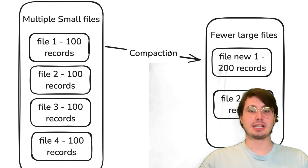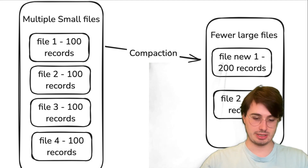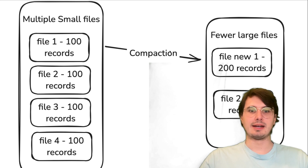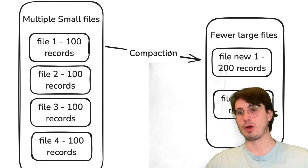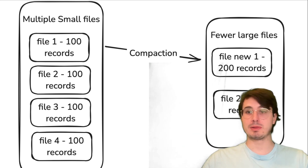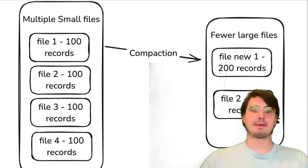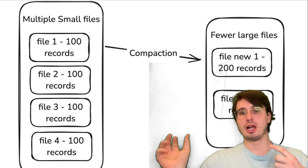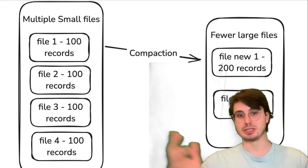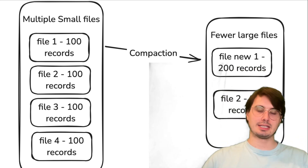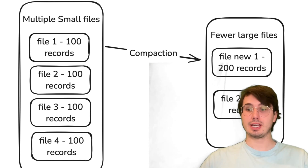With snapshot expiration, you can set a policy to expire snapshots older than a certain time period — whether that's one year, five years, or whatever your data retention policy requires. This is important for keeping the number of metadata files and the amount of orphan data manageable. It's just not tenable to have snapshots going all the way back to the beginning of time. Finally, orphan file cleanup: Iceberg has a built-in function called remove orphan files that cleans up any unused data files after a failed write or manual deletion, which helps ensure you're not paying for storage you're not going to use.